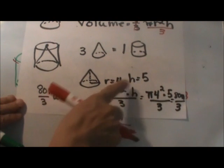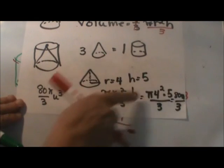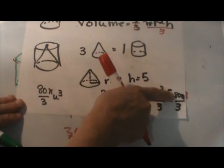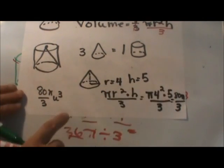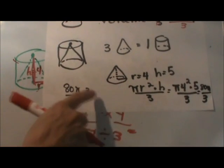If the radius is four, the height is five, you plug in four for r, five for the height. This comes out to be 80 pi over three. So the final answer would be 80 pi thirds units cubed.